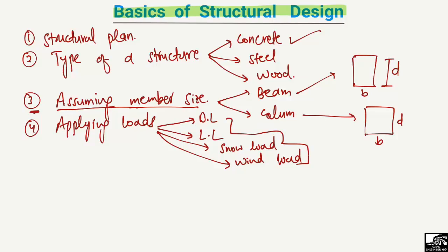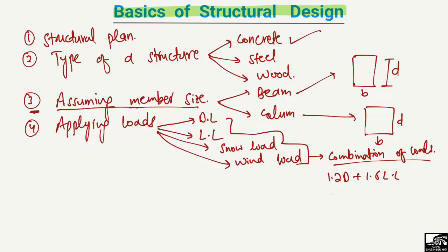We have different kinds of loads and we need to apply combinations of loads to the structure members. For example, according to the American code, the combination is 1.2 × dead load + 1.6 × live load. According to the European code, it is 1.35 × dead load + 1.5 × live load. These factors increase the load demand on the structural member.